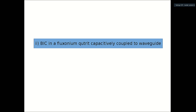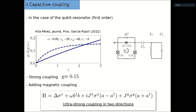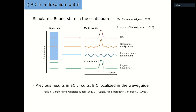Now, it's a qutrit — a three-level system — coupled to a microwave. Let me say a few words about the bound state in the continuum (BIC). This concept can be explained with a picture taken from a reference. BICs were first predicted a very long time ago by von Neumann and Wigner.